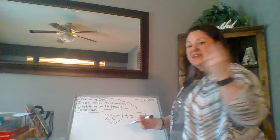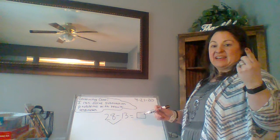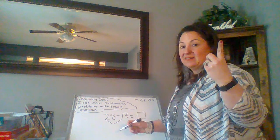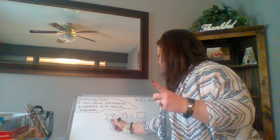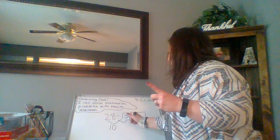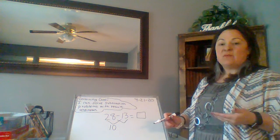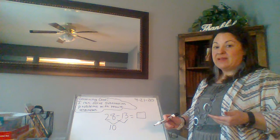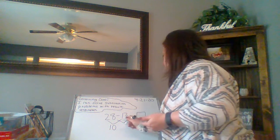So if I have two 10s and I'm taking away one 10, that leaves me with a 10, one 10 or 10. Let's do the same thing with the 1s. If I have eight 1s and I take away three 1s, that's going to leave me with five 1s.